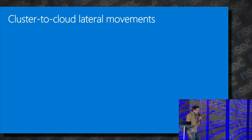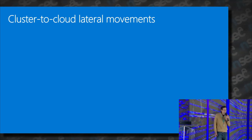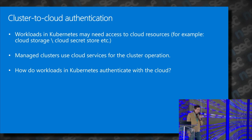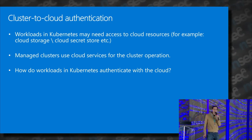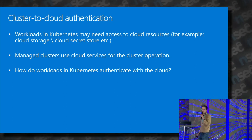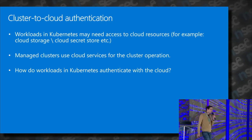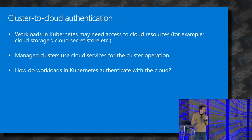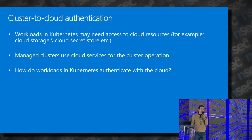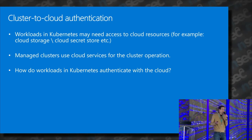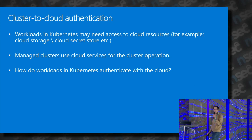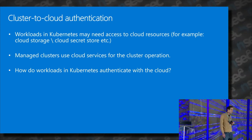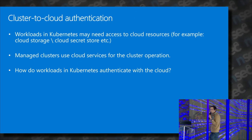We talked about inner-cluster lateral movement. Now let's move to cluster-to-cloud lateral movement, which is even more interesting. Workloads in Kubernetes may need access to cloud resources — for example, an application that needs to store data in cloud storage. In managed clusters like AKS, EKS, or GKE, they must access cloud resources because the nodes are virtual machines and the cluster uses cloud load balancers. The question is: how do workloads in Kubernetes authenticate with the cloud provider API?